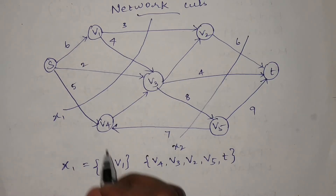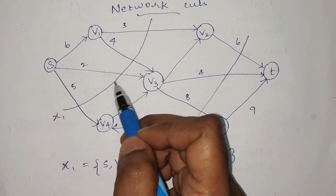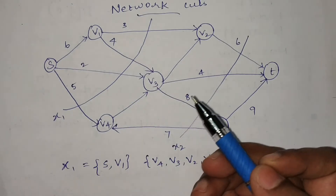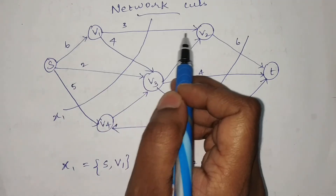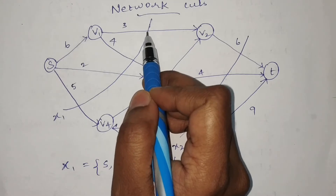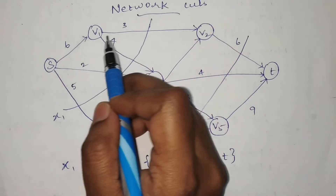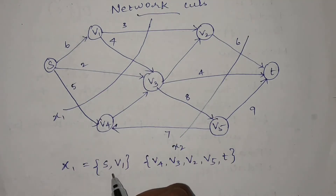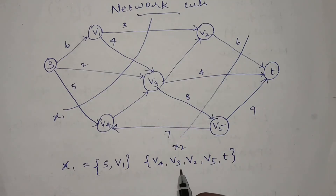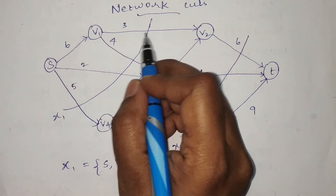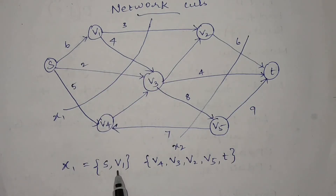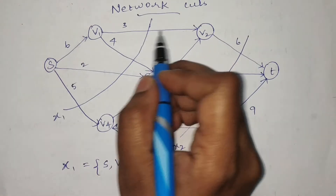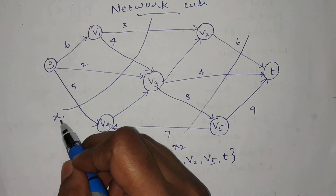Now we need to check whether each edge that the cut is enabled on is a forward edge or a backward edge. To determine this: if the first vertex of the edge is in the first partition and the second vertex is in the second partition, then it is a forward edge. For example, edge v1 to v2 — v1 is in the first partition and v2 is in the second partition, so it is a forward edge and we include its edge value for computing the capacity of x1.